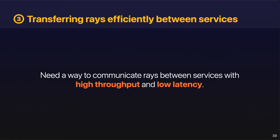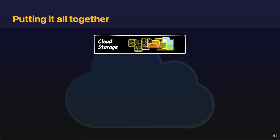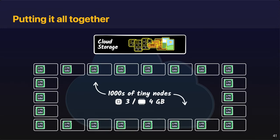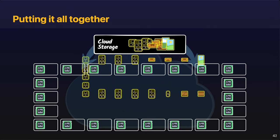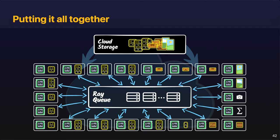For the third challenge, we needed a messaging service to communicate rays with the highest possible performance between these services. Unfortunately, off-the-shelf messaging services such as SQS did not meet our latency and throughput demands. So we rolled our own messaging service out of memcached instances — basically a fleet of tens of small but high-bandwidth machines that serve as our distributed ray queue. To put it all together: we have a terabyte-scale scene stored in cloud storage, thousands of workers with three CPUs and only four gigabytes of RAM, partitioned across services. Those nodes communicate by adding and removing rays from queues stored in memory in a set of high-bandwidth memcached instances.